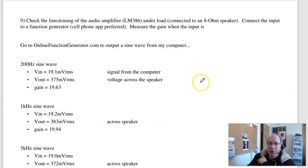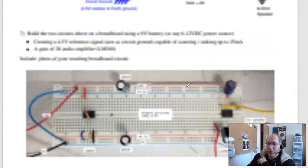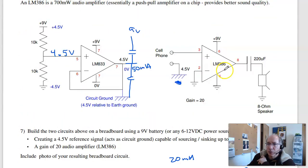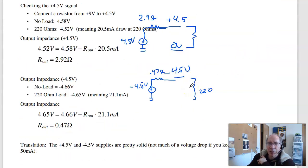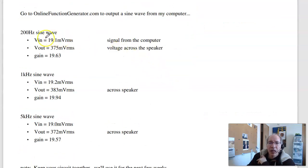Number nine is find the gain of the 386 op amp. So to do that, I'm going to apply a sine wave in. The reason for sine wave is I can use my multimeter and measure the RMS voltage. At 200 hertz, the input was 19.1 millivolts. That's from my computer. The output was 375 millivolts, so the gain is 19.63. At 1 kilohertz, the gain is 19.9. 5 kilohertz, 19.5.